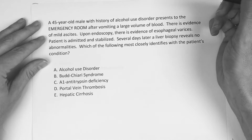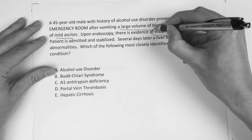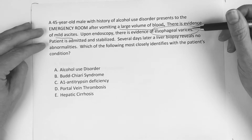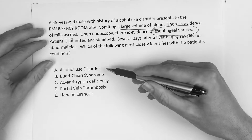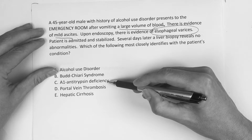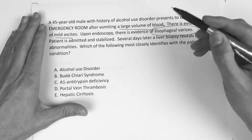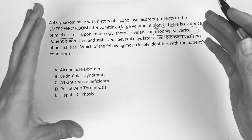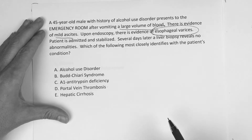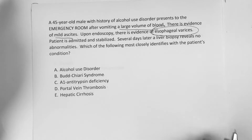So he's got ascites, he vomited all this blood, he's got esophageal varices — that's probably the most path-mnemonic piece here. He's admitted and stabilized. Our answer choices are: alcohol use disorder, Budd-Chiari, alpha-1 antitrypsin deficiency, portal vein thrombosis, or hepatic cirrhosis. They're all dealing with the liver and esophageal varices. This comes down to anatomy — there's a key part of this question that you really have to understand the anatomy to get it right.